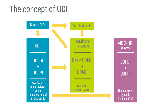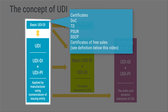Let's start with an overview of the UDI concept. We can picture it as three pillars, starting from the left, and I will then further elaborate the pillars. First, we have the basic UDI-DI, sometimes called 'beauty.' The purpose of the basic UDI-DI is to act as the main key in EUDAMED and relevant documentation, like certificates, declaration of conformity, technical documentation, periodic safety update reports, SSEPs, and certificates of free sales.